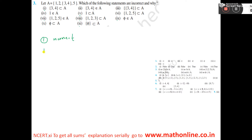Next, number 2: {3,4}. This is a set and here this set is an element. So, this is element of A, and here it is written element of A. So, this is correct.